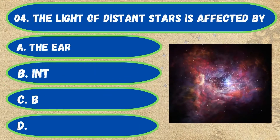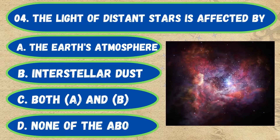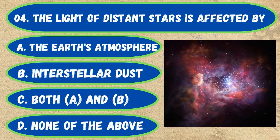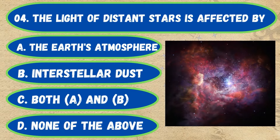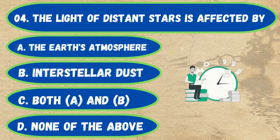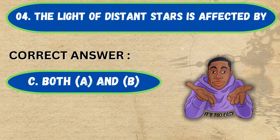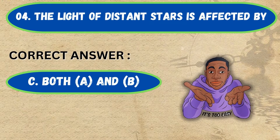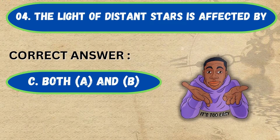Question number 4. The light of distant stars is affected by: option A, the earth's atmosphere; B, interstellar dust; C, both A and B; D, none of the above. The correct answer is option C, both A and B.